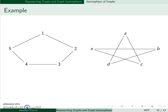For example here, we have the pentagon and the star, and these graphs are actually isomorphic. Here's the map.